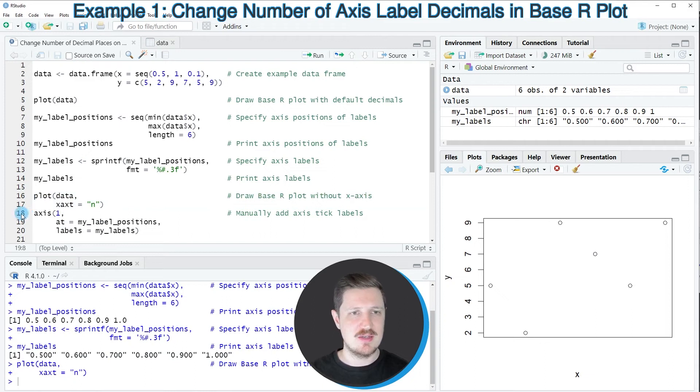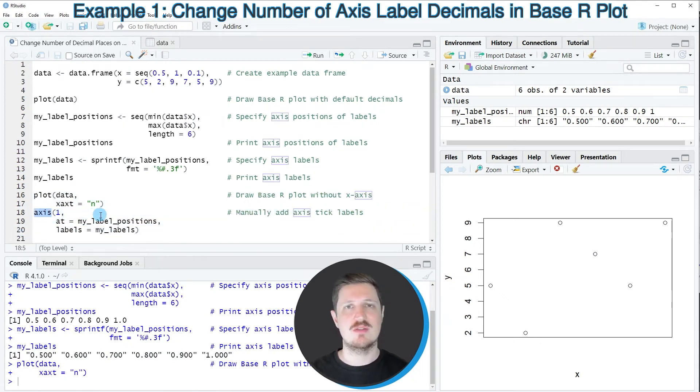And then in the next step, in lines 18 to 20 of the code, I'm using the axis function to add labels manually. And I'm specifying that I want to add them on the x-axis of our plot. And I'm specifying the positions that I have created before. And I'm specifying the labels that I have created before as well.